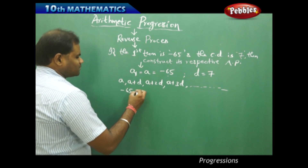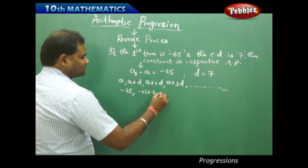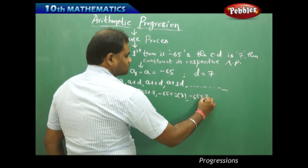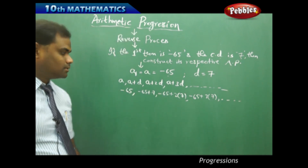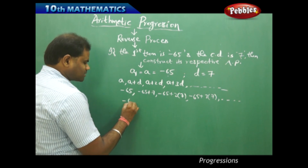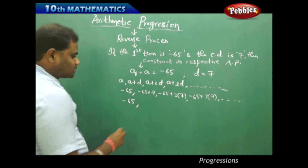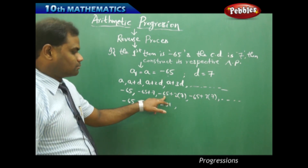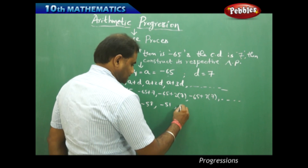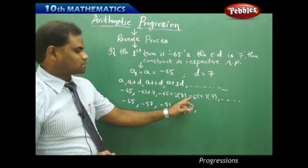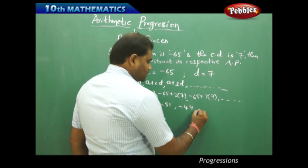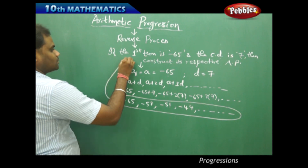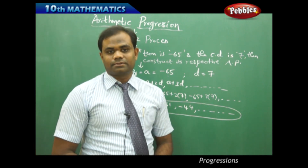Initially A is negative 65, then the next term is A plus D which is negative 65 plus 7, then A plus 2D is negative 65 plus 14, and so on. On further simplification this gives: negative 65, negative 58, negative 51, negative 44, and so forth. This is how the sequence is constructed using the first term and common difference.